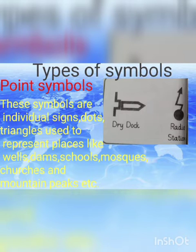Point symbols میں dots ہیں اور different triangles ہیں which we use on the map as a point symbol. They are used to represent places like wells, dams, schools, mosques, churches, and mountain peaks on the map.